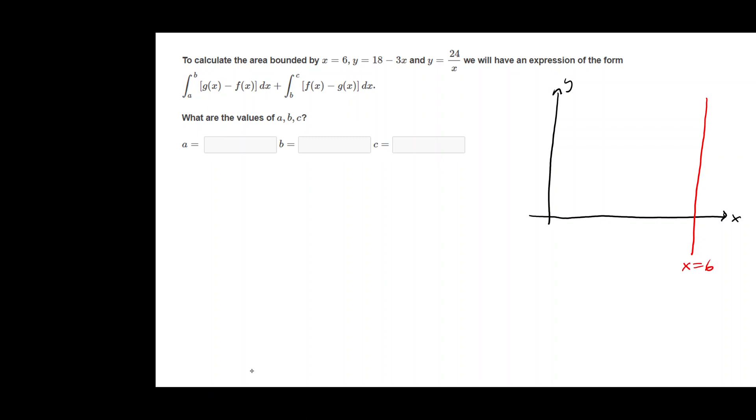And then 18 minus 3x, it is a line with a negative slope and a positive intercept, so it's going to have this type of shape but I don't really want to draw it yet. The 24 over x is a hyperbola and has this shape. I don't want to draw it either, not yet.